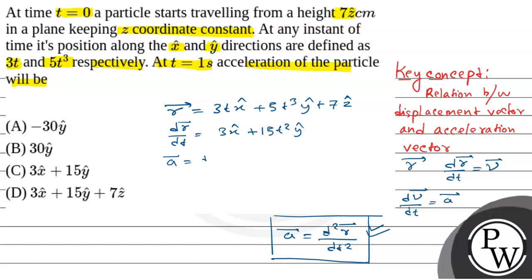So acceleration is equal to d²r⃗/dt² which is basically 30t ŷ, because 3 is constant. So at t equals 1 second, a⃗ will be 30ŷ.